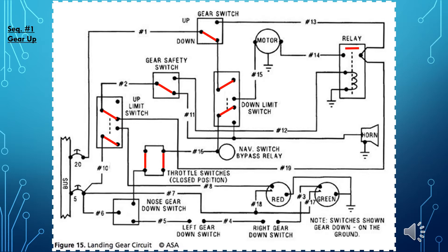We begin this slide by observing the switches in the gear down, airplane on the ground position. Note the location of the throttle switch — it will be the first switch to change position as we transition from parked on the ground with the gear down to cruise flight with the gear up. As the pilot advances the throttle to achieve takeoff power, the throttle switch will open. The airplane accelerates down the runway and once it achieves rotation speed, it will lift off, taking the weight off the landing gear, resulting in the gear safety switch changing position. This helps to complete the circuit to the gear relay through the up limit switch once the pilot places the gear switch in the up position.